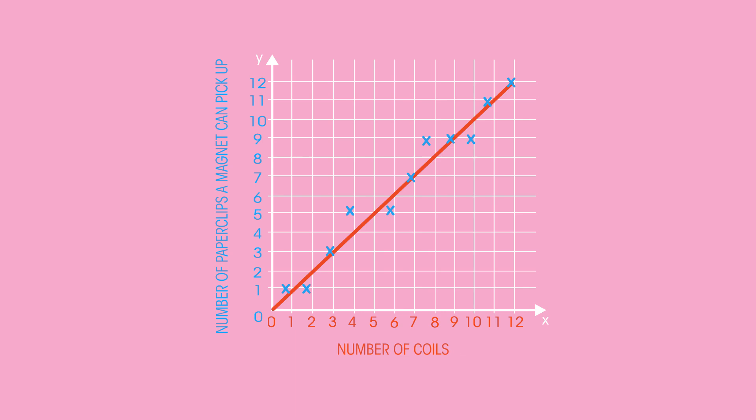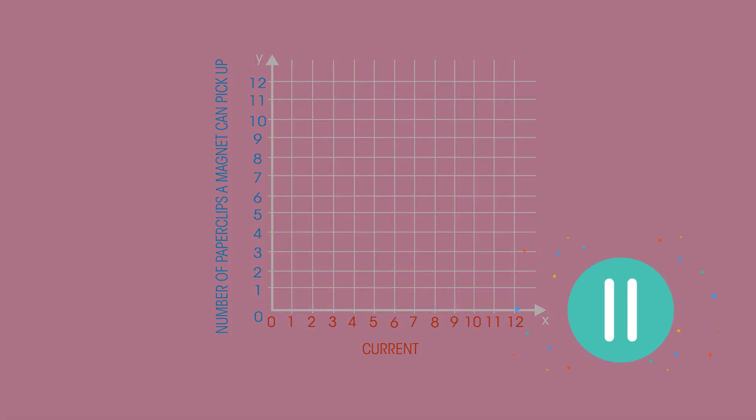How do you think the graph would look if we instead had the current on the x-axis? What would the relationship be between the current and the number of paper clips? Pause the video and have a think.